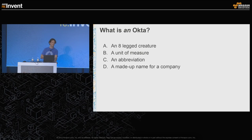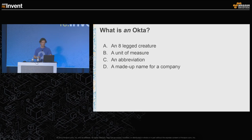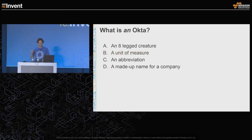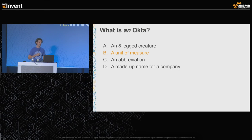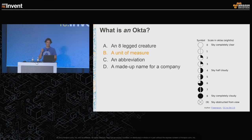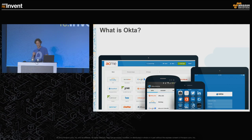How about raise your hand if you think Okta is a unit of measure? How about an abbreviation? And what about a made-up name for a company? Well actually, Okta is a word — it is a unit of measure for cloud cover. It's used by aviators and sailors to describe on a scale from zero to eight how much visibility there is.